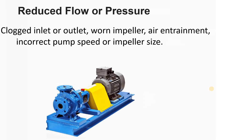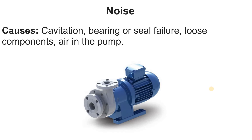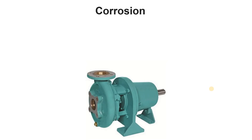The next defect is unusual noise. When doing rounds in a plant, unusual noises from a pump can indicate cavitation, bearing or seal failure, misalignment, loose components, rotating component issues, air in the pump, or improper priming. You must take unusual noise seriously; otherwise it can damage your pump.